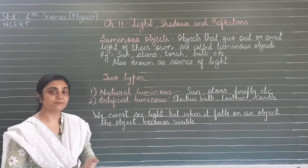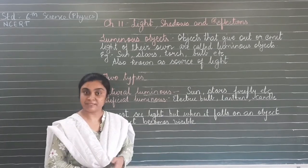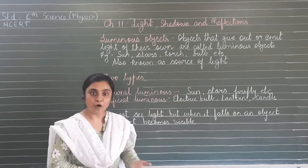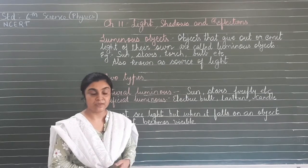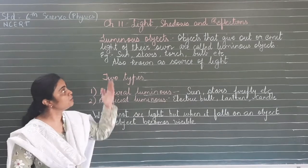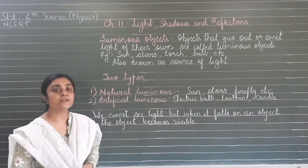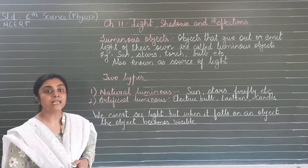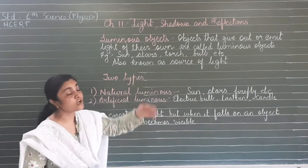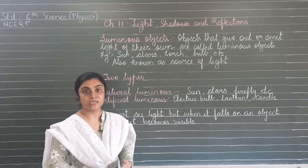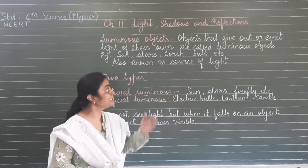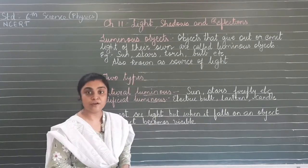Non-luminous objects are objects which do not emit light, which do not give light. For example, table, cupboard, wall - they do not give light. Luminous objects give light and non-luminous objects do not give light. These luminous objects are also known as sources of light because they emit the light.